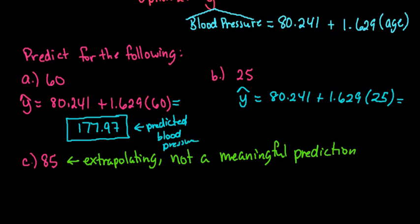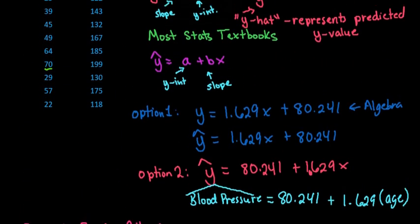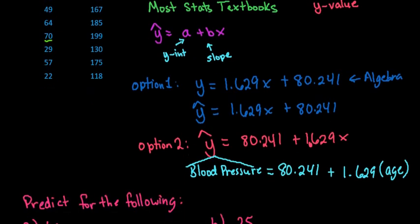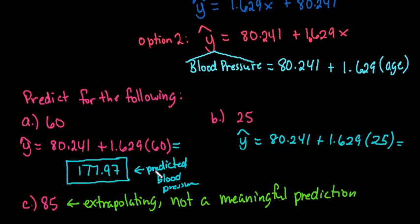So if we look up here to see if it's kind of reasonable, if we find something that's around 60, notice that 64 was 185, 57 was 175, so 177.97 seems like a reasonable answer.